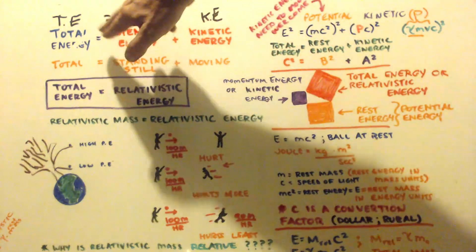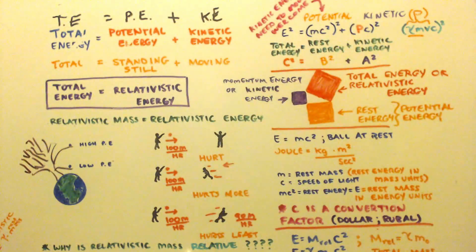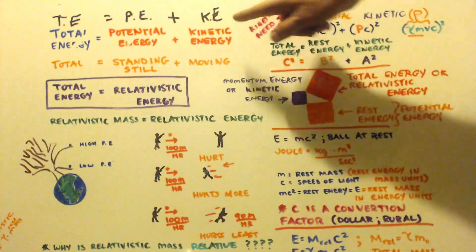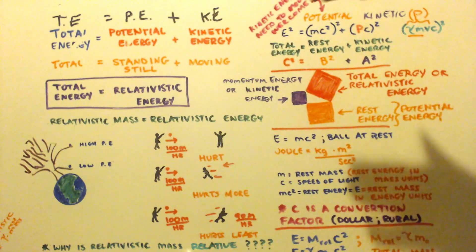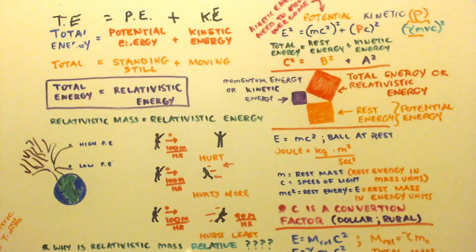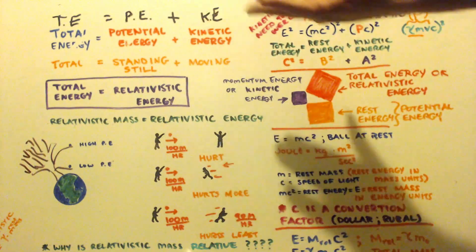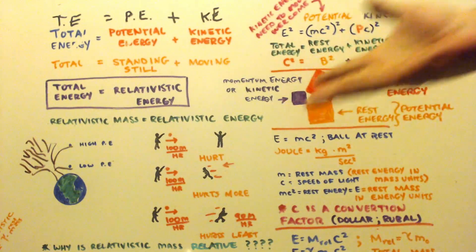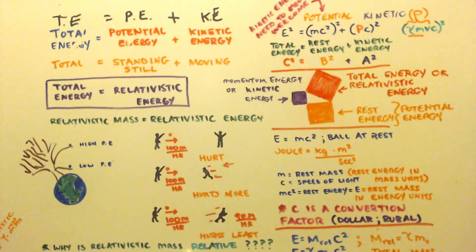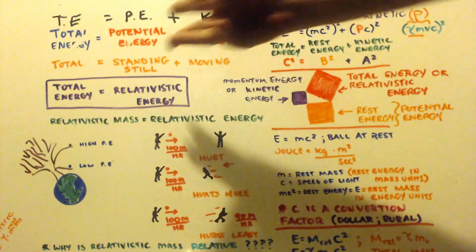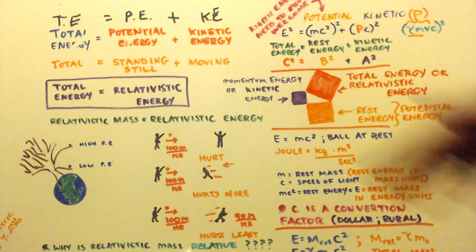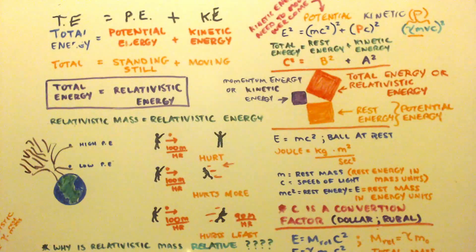Everyone knows this. Total energy equals potential energy plus kinetic energy. What's kinetic energy? That's like moving — when you're moving, you have energy. What's potential energy? That's your standing-still energy. Add them both together. You're either standing still or you're moving, so there's only two kinds of main energy. Add them up, and it's the total energy.